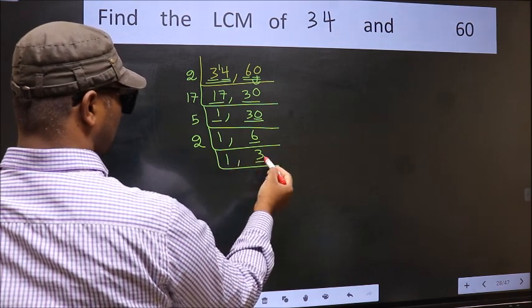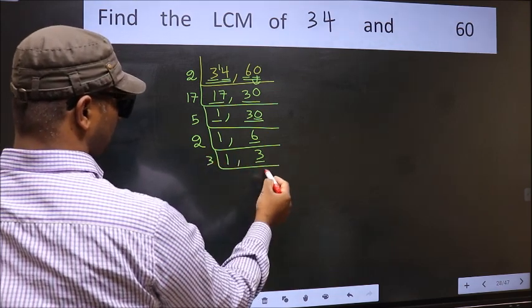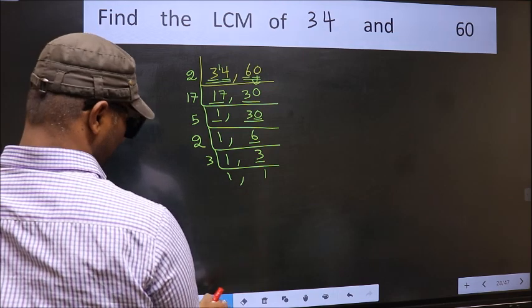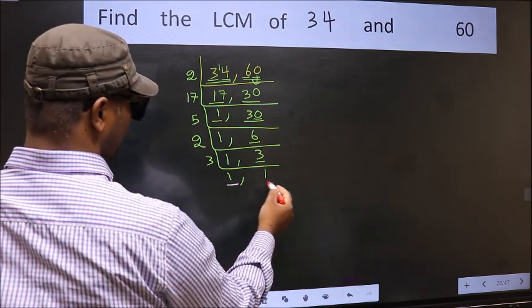Now we have 3. 3 is a prime number, so 3 times 1 is 3. So we got 1 in both the places.